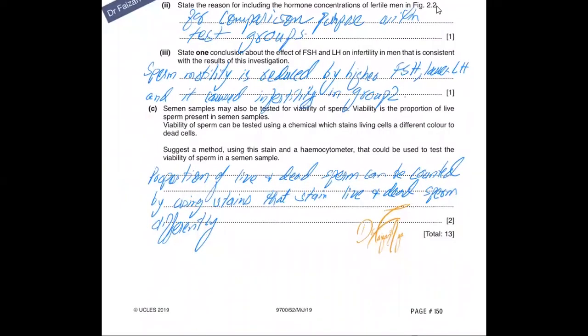Part C: Semen samples may also be tested for viability of sperm. Viability means how many are living - the proportion of live sperm present in semen samples. Viability can be tested using chemicals which stain living cells a different color than dead cells. Living sperm and dead sperm can be differentiated. Suggest a method using this stain and a hemocytometer to test viability of sperm. You can count the proportion of live and dead sperm using the microscope and hemocytometer with these stains because they stain live and dead sperm differently.